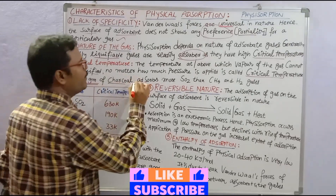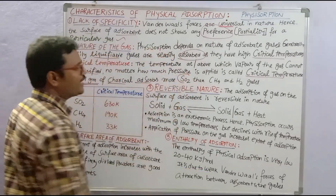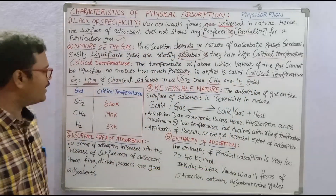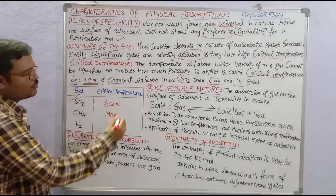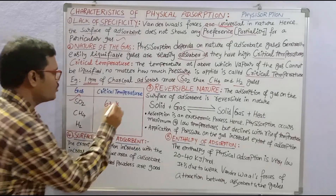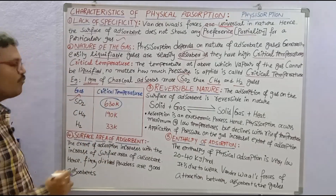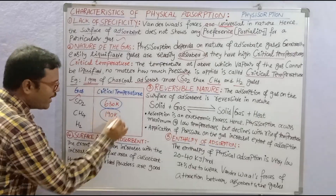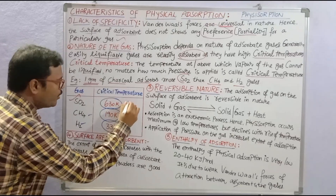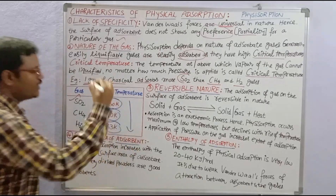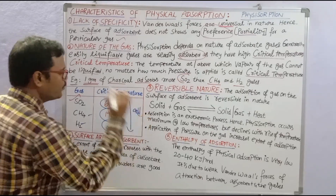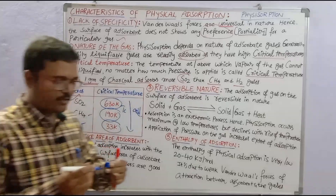For example, one gram of charcoal can absorb more sulfur dioxide gas compared to methane and hydrogen. The critical temperature of sulfur dioxide is 630 Kelvin, for methane it is 190 Kelvin, and for hydrogen it is 33 Kelvin. So from sulfur dioxide to hydrogen, the critical temperature decreases, and so does the extent of adsorption.